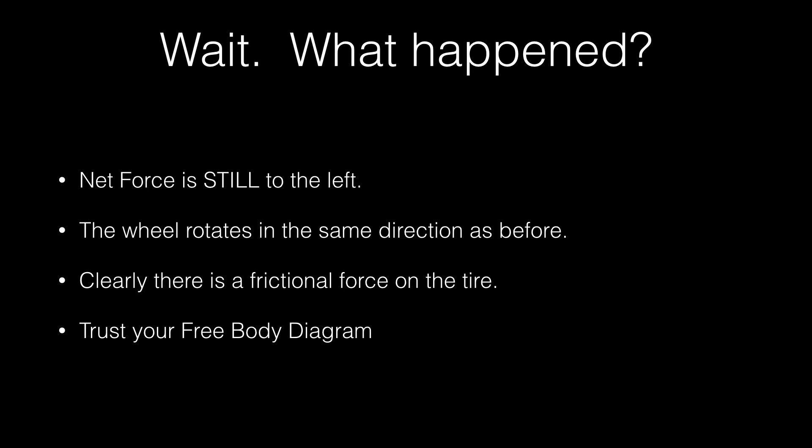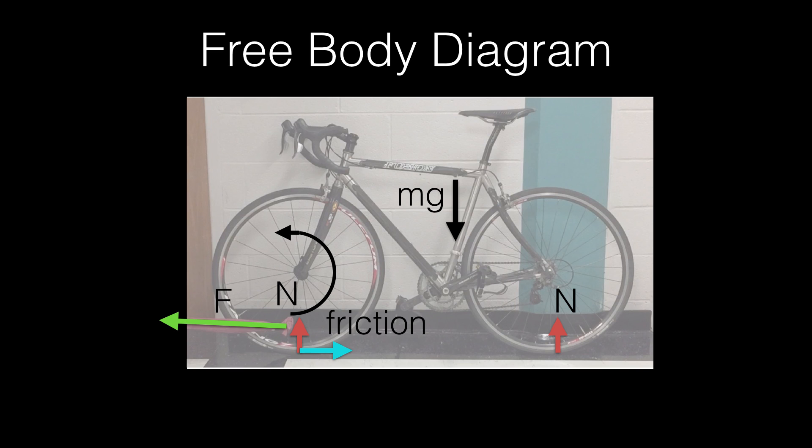So here's the free body diagram for the bike. Okay, so it looks just like before except this force has moved down to the bottom and now there's a small frictional force on the bottom of the wheel which makes it rotate, in this case counterclockwise, but the bike's moving accelerating to the left.